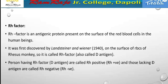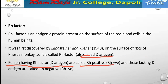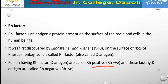The Rh factor is an antigenic protein discovered by Landsteiner and Wiener. The rhesus monkey is a type of species on which this was first studied. The Rh factor involves a D-type antigen. Persons having the Rh factor D antigen are called Rh positive, and those lacking the D antigen are called Rh negative. Antigen D present means Rh positive; antigen D absent means Rh negative.